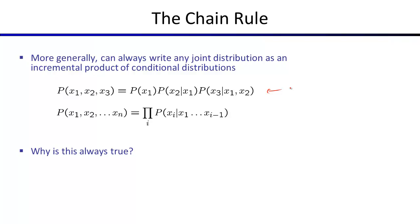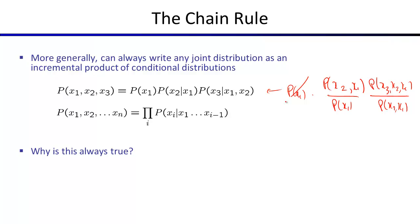Why is the chain rule always true? Starting from the definition of conditional probability: P(X2|X1) = P(X1,X2)/P(X1), and P(X3|X1,X2) = P(X1,X2,X3)/P(X1,X2). When you multiply these terms together with P(X1), intermediate terms cancel out, and you're left with just the joint over all variables. For a larger number of variables, the same cancellation keeps happening. If you want to prove this in generality, you'd use induction — show it's true for the base case, then go from k to k+1.